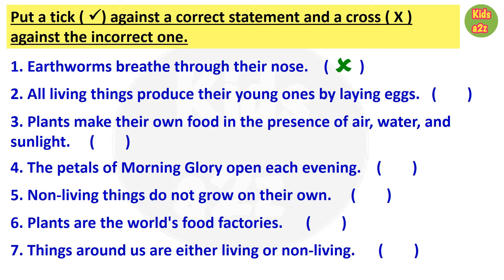Statement 3: plants make their own food in the presence of air, water, and sunlight — that is correct, so they need to put a tick. Statement 4: the petals of morning glory open each evening. Statement 5: non-living things do not grow on their own — correct statement. Statement 6: plants are the world's food factories — correct. Statement 7: things around us are either living or non-living — also correct.